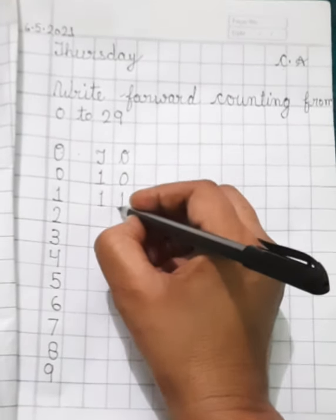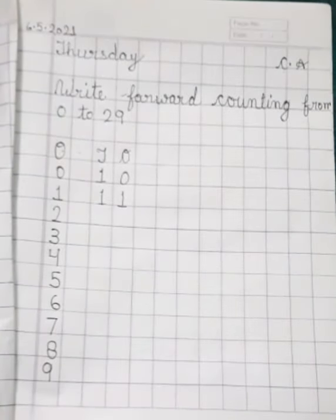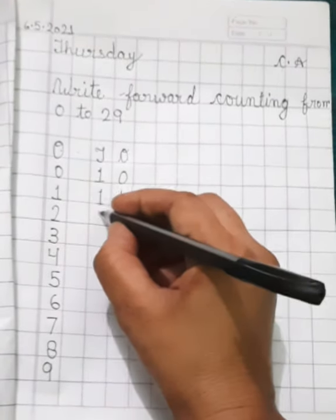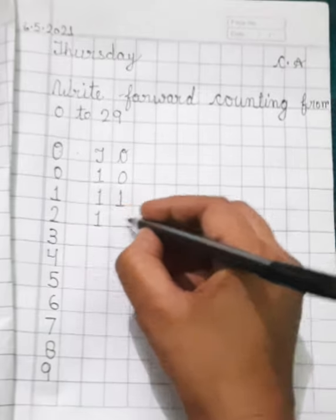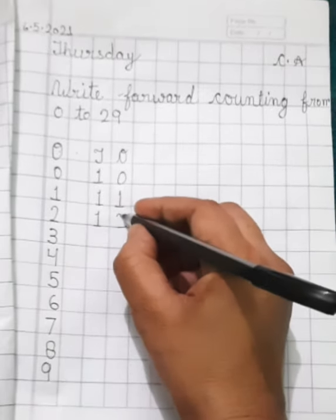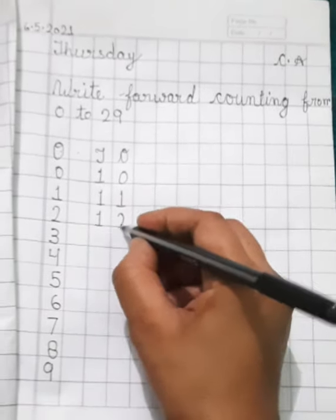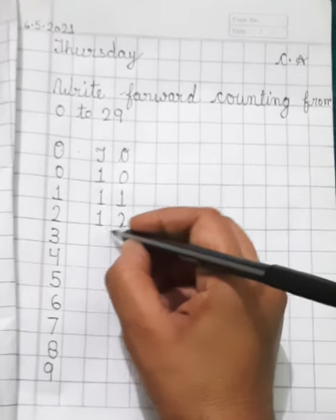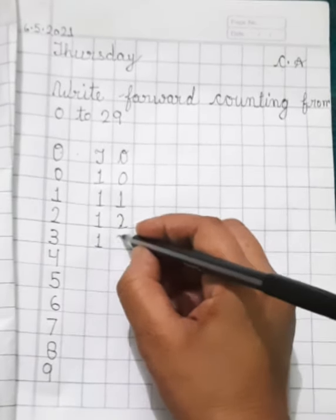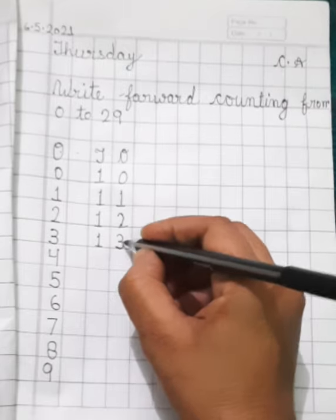Now what come after ten? Eleven. One or one milkar kya ban jata hai? Eleven. Then twelve. You will touch the bottom line. Thirteen.